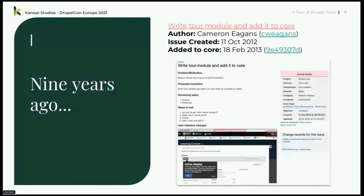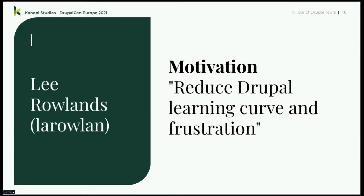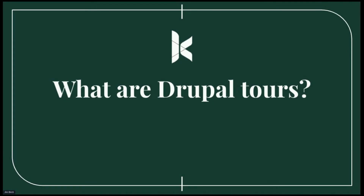Nine years ago, Cameron Egan created an issue to write a tour module and add it to core — there's the link right there. It's pretty cool to do some digital Drupal archaeology to figure out where this content came from. My favorite thing about that issue is Lee Rollins changed it at some point and said: to reduce the Drupal learning curve and frustration.